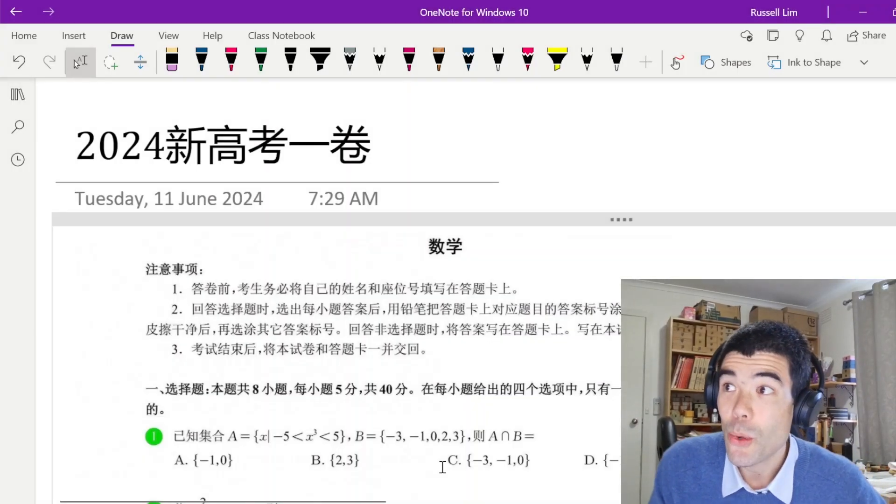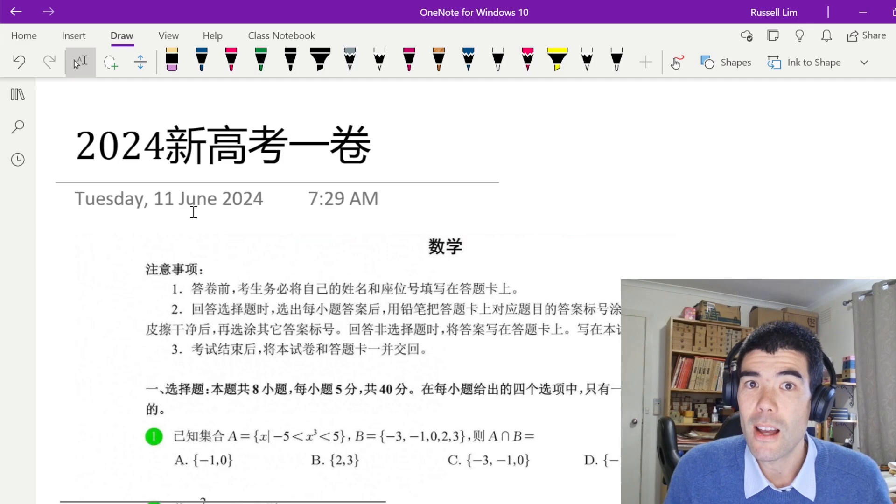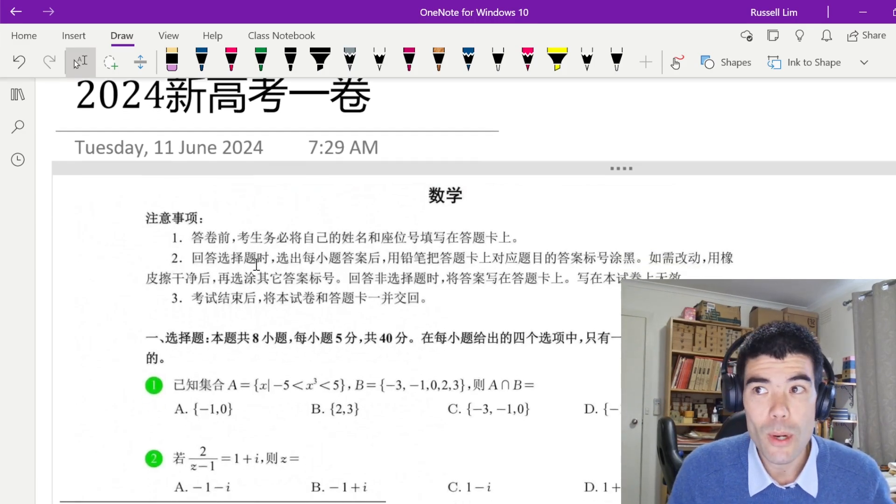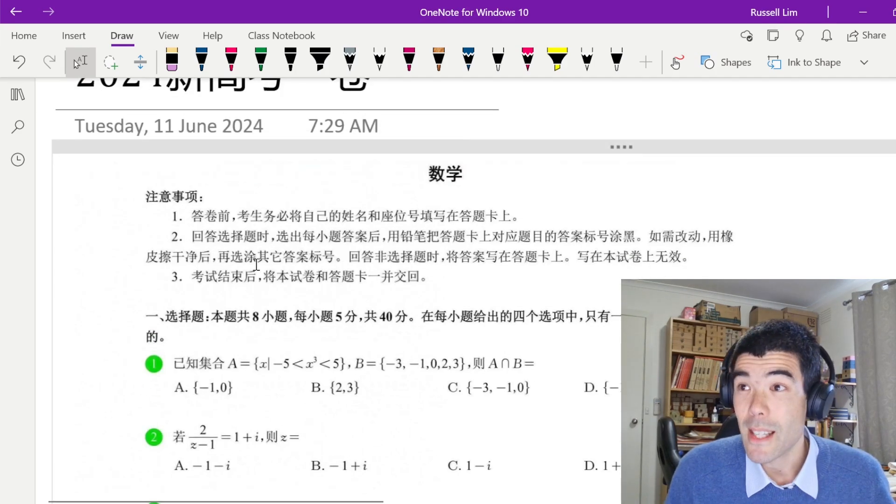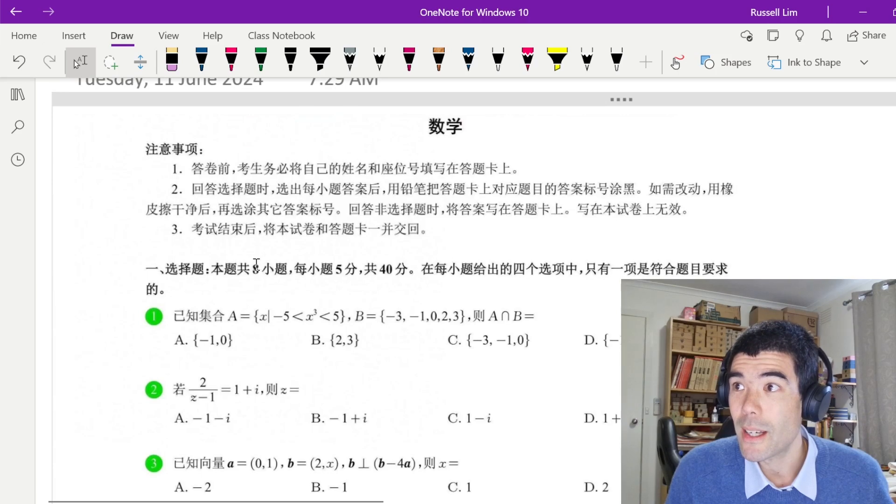Alright, so we're going to have a look at a functions question from the 2024 Gaokao. This is a Chinese high school math exam. From what I understand in this system, everyone does maths, everyone does the same maths, everyone does the same exam. This exam was probably set by 5 million students last week, which is quite astounding.